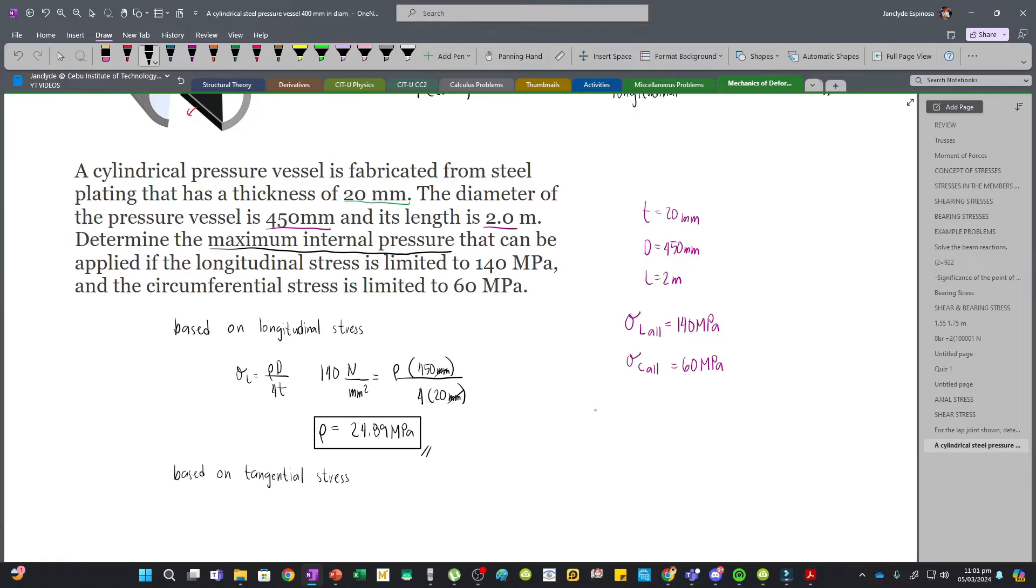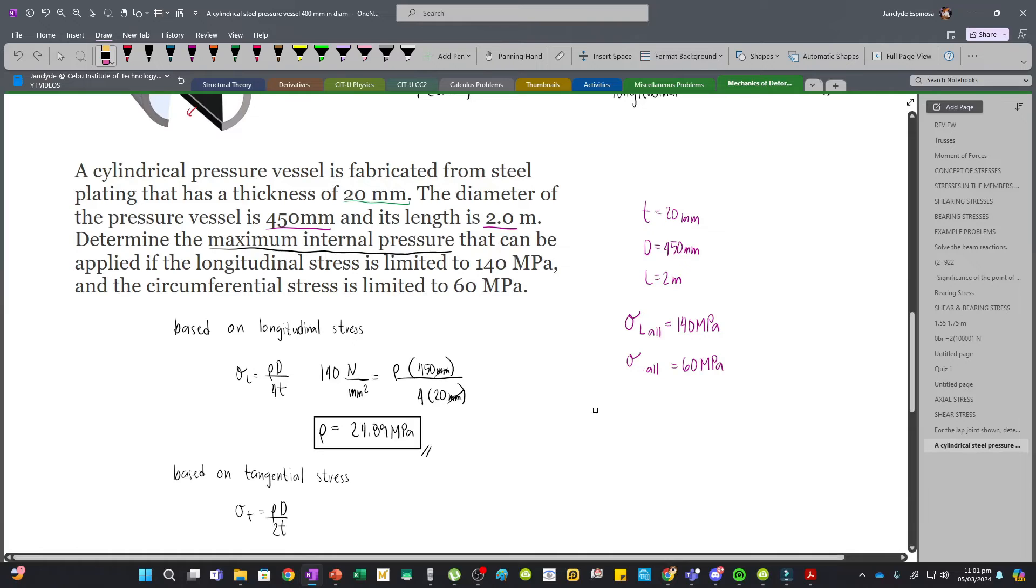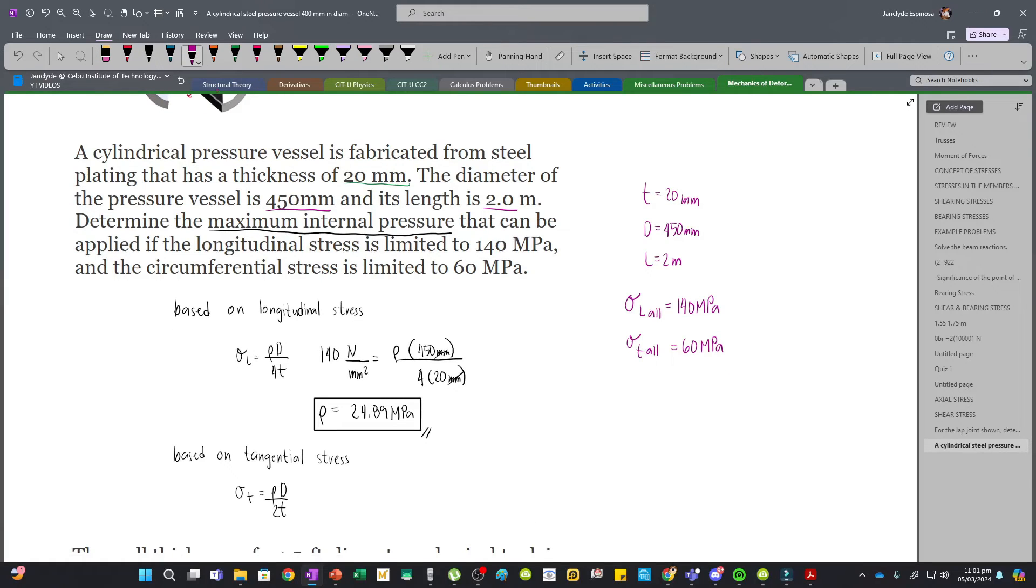And then based on tangential stress, we have PD over 2T and our allowable is 60 MPa. Let's change this to tangential because that's the same as circumferential. So our allowable is 60 newton per mm squared and then P times the diameter divided by 2T.